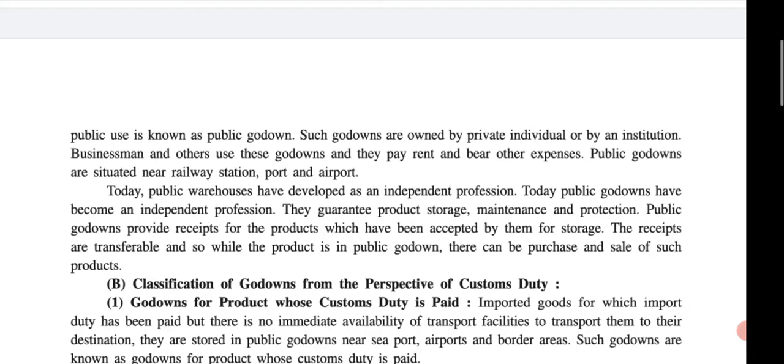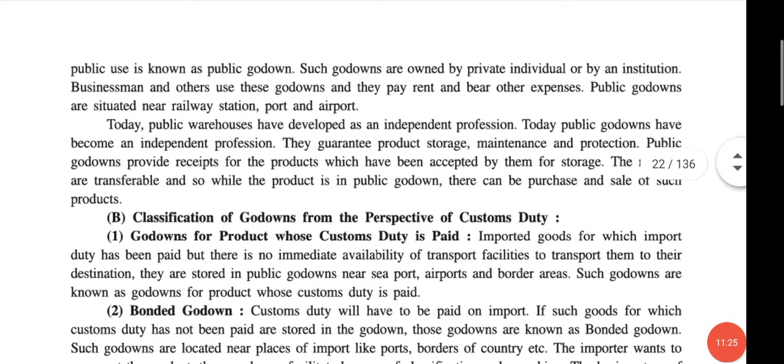Today the public warehouse has developed as an independent profession. The public godown guarantees product storage, maintenance, and protection against theft or damage. The public godown provides a receipt for the products accepted for storage, listing the number and amount of each item. This receipt is transferable, and while the product is in the public godown, purchase and sale of such products can take place.